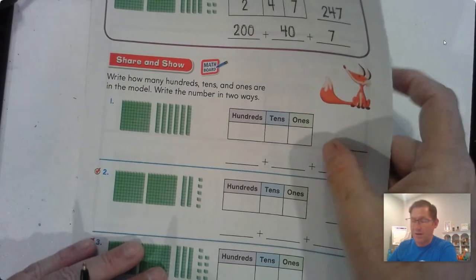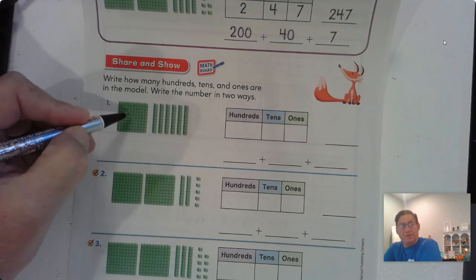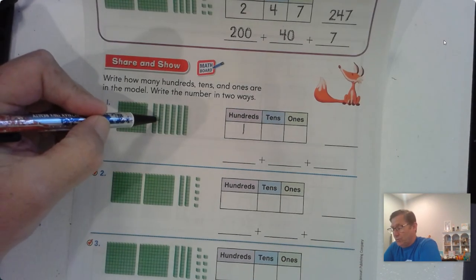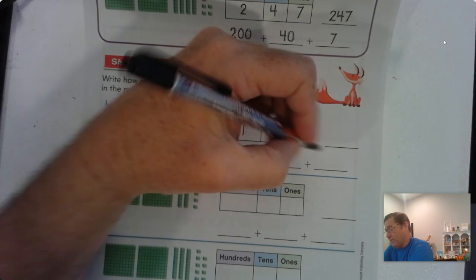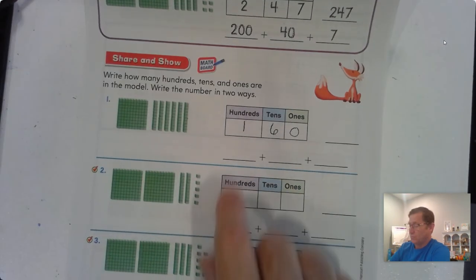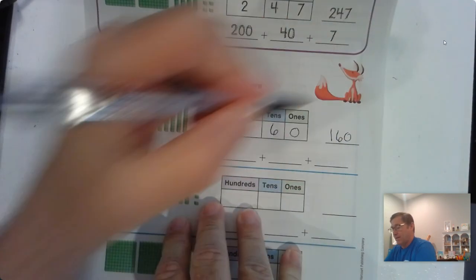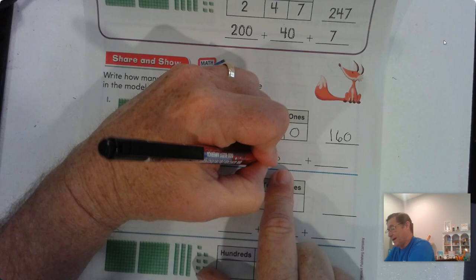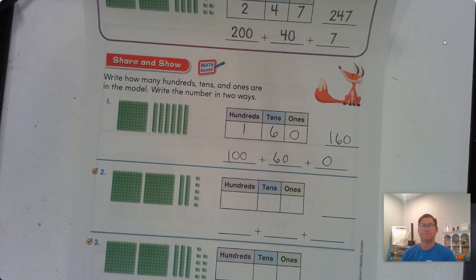All right. So now let's you try it. Write how many hundreds, tens, and ones are in the model, and then write the number in two ways. So here I see 1 hundred block. So I'm just going to put a 1 in the hundreds place. And then I see 2, 4, 6 tens, and I don't see any one blocks. So what is this number? It's 160, right? So we write that as 100 plus 60. 6 tens is 60, and 0 ones.